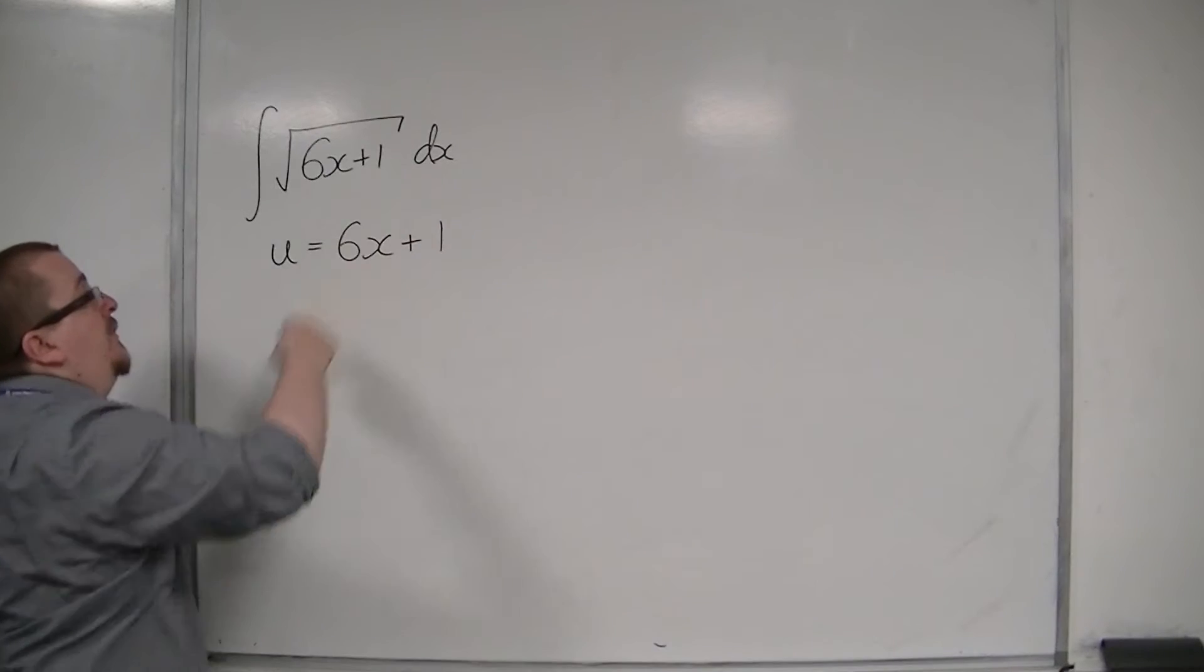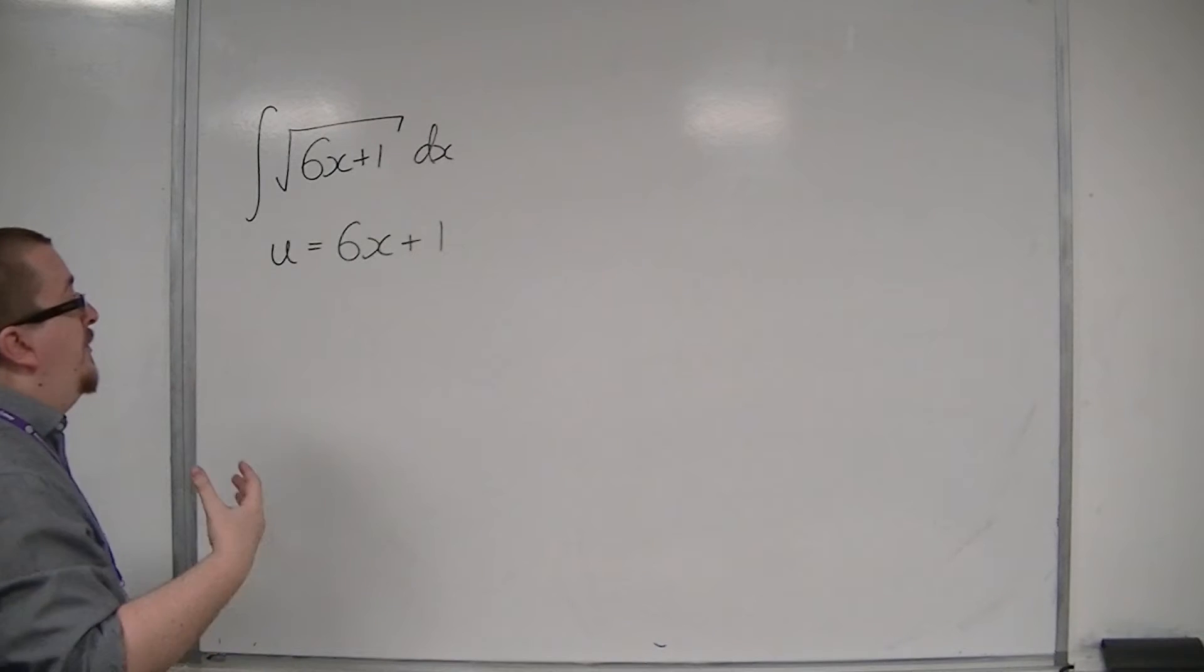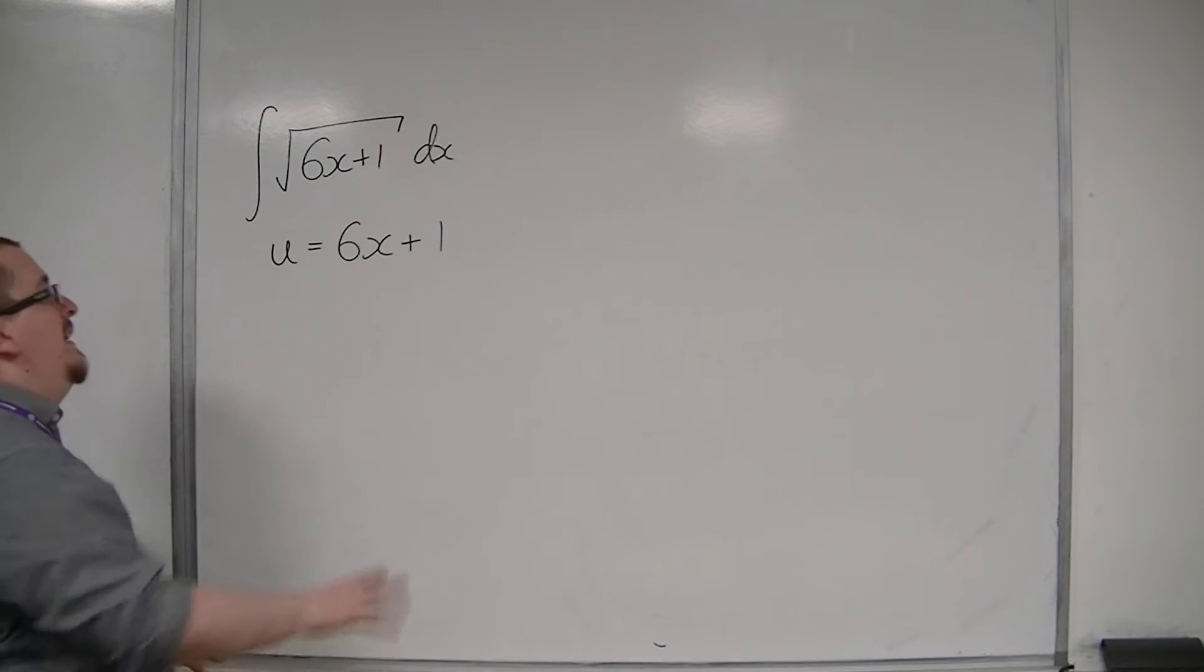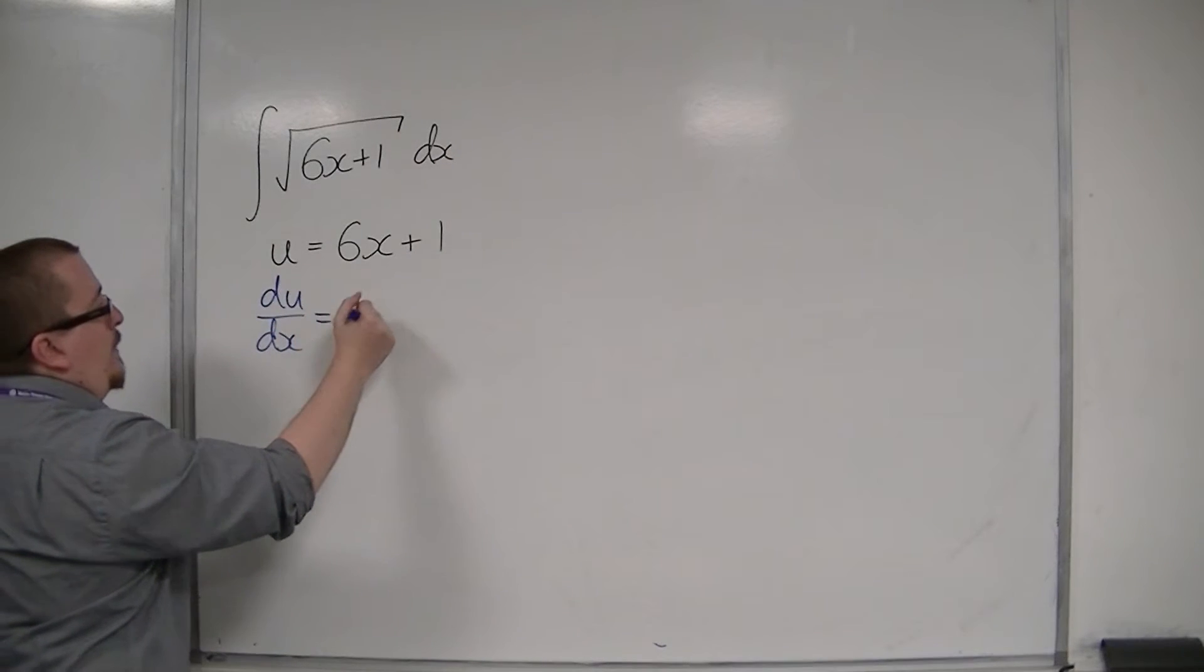So, I can't have this dx here anymore. So, in order to get a du, the first step with all integration by substitution questions is to differentiate your substitution. So, you want to find du by dx. And that would be 6.